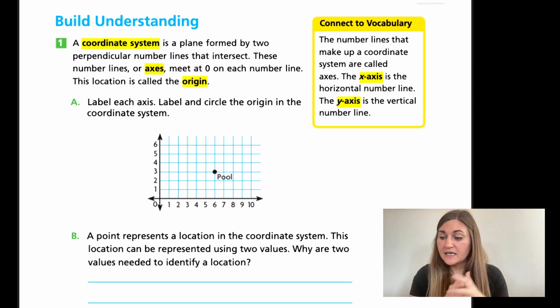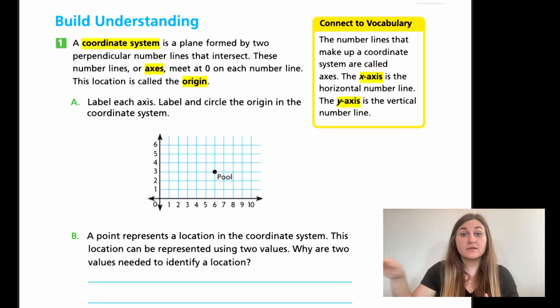A coordinate system is a plane that's formed by two perpendicular number lines. Perpendicular meet like this - one is up and down and one is left and right. That's perpendicular when they meet. And remember, parallel, they're next to each other and they never touch. These are two perpendicular number lines. It's a number line going this way and the next number line is going from zero to 10 this way. And they intersect, meaning they meet together at a point.